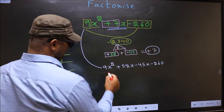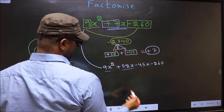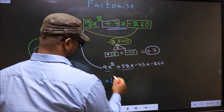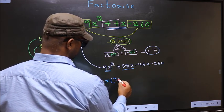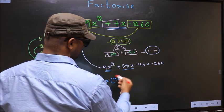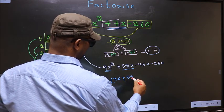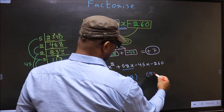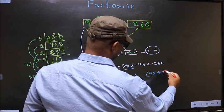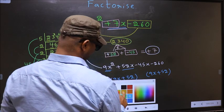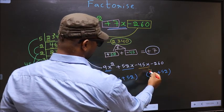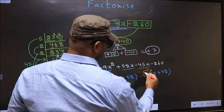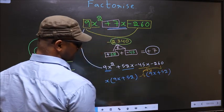Next, now from these two terms what can be taken out common is x. So here you get 9x, plus from this x out you get 52. Now whatever you got here, here also you should get the same thing. Now from this 9x has gone inside, outside you get minus 5. Even if you multiply and check, still you get the same thing.